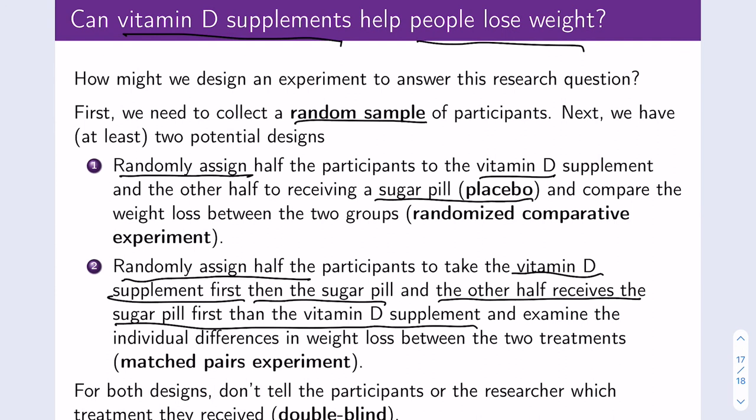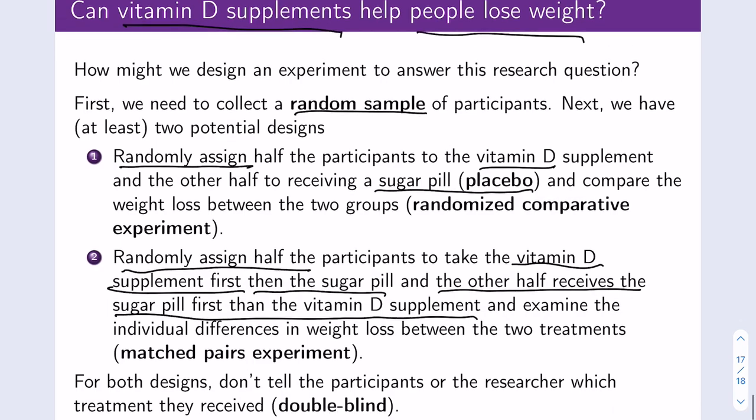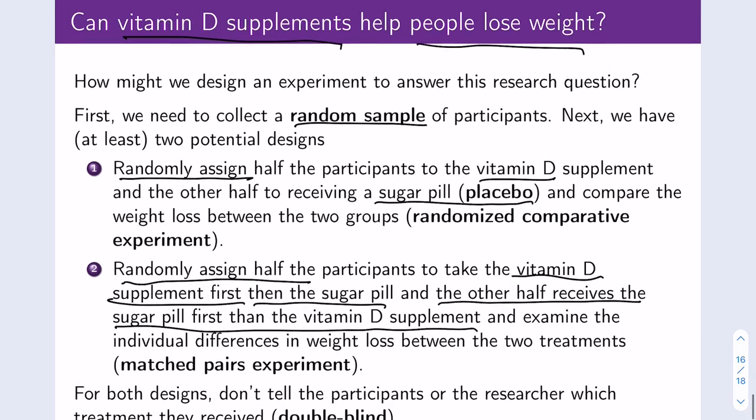For both designs, we shouldn't tell the participants or the researcher which treatment they received, making it double blind. In fact, we could also make it triple blind — we don't tell the statistician either. We can code the data so that no one knows which treatment is which.